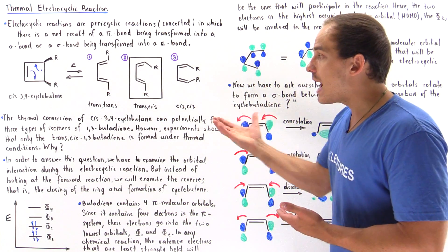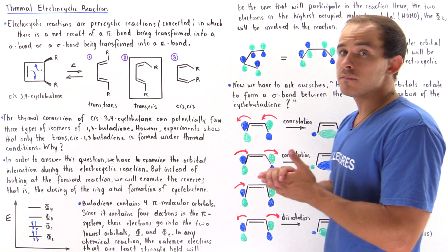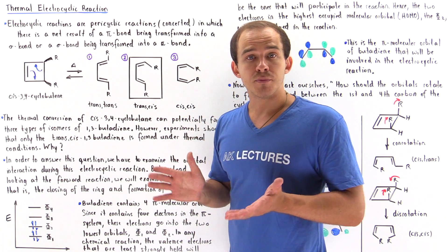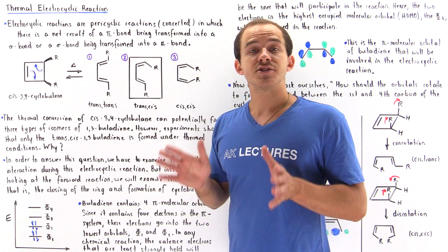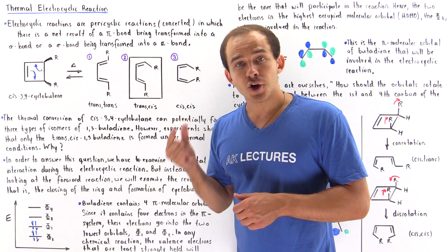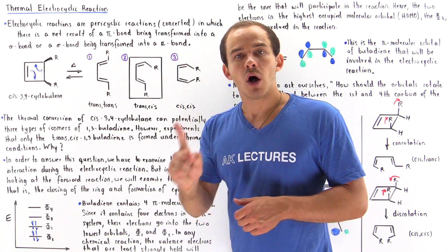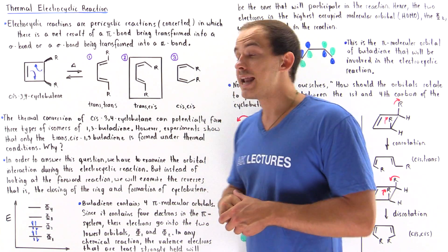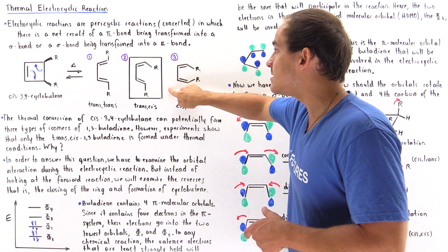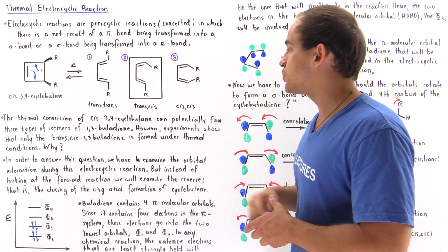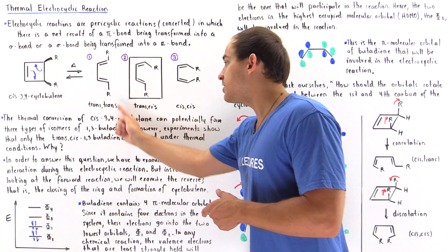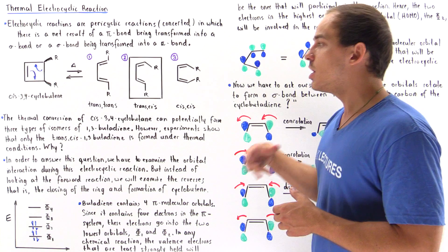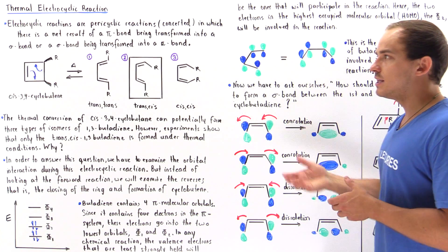So which isomer is actually formed? Are all three isomers possible? The answer is no. Under thermal conditions, only one isomer of butadiene will form — the trans-cis or cis-trans isomer.